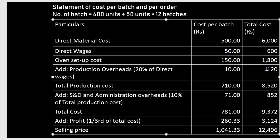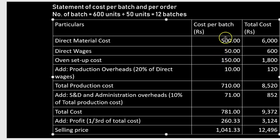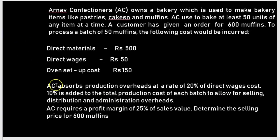Now total the production cost, which is the sum of direct materials, direct wages, oven setup cost, and production overheads: 500 + 50 + 150 + 10 = rupees 710 per batch. Multiplying by 12 gives a total production cost of rupees 8520.